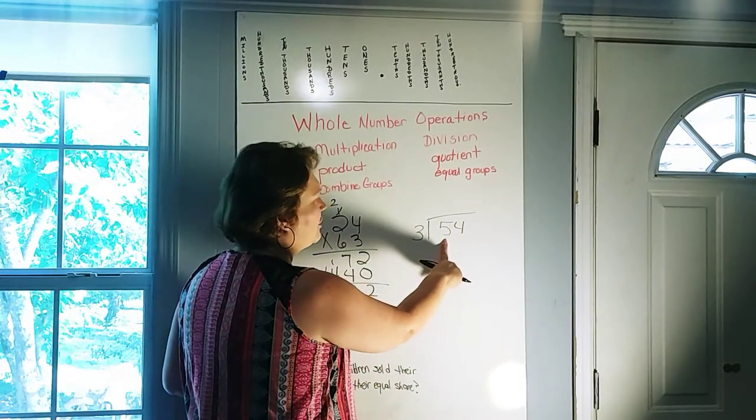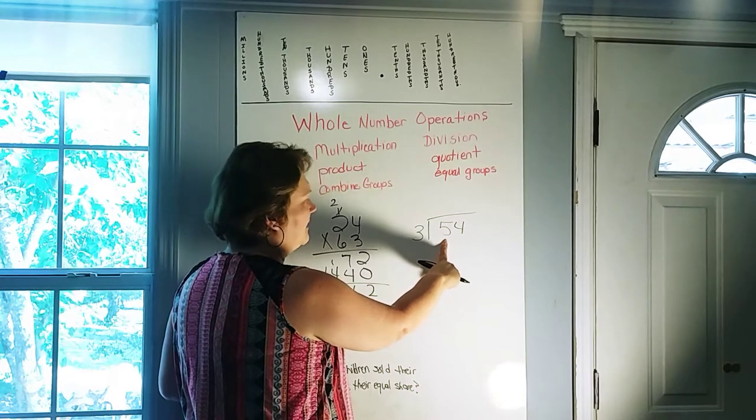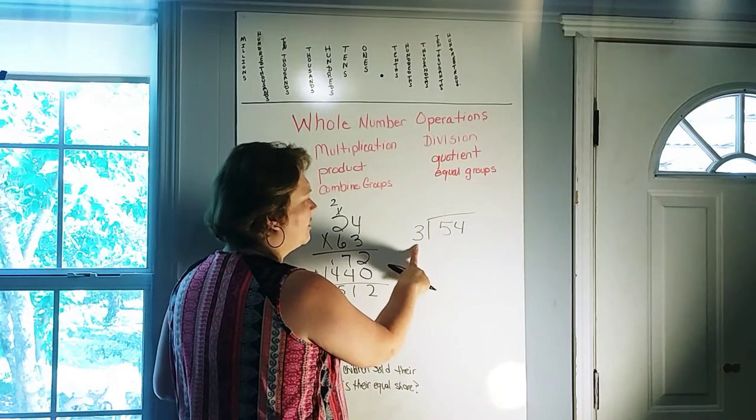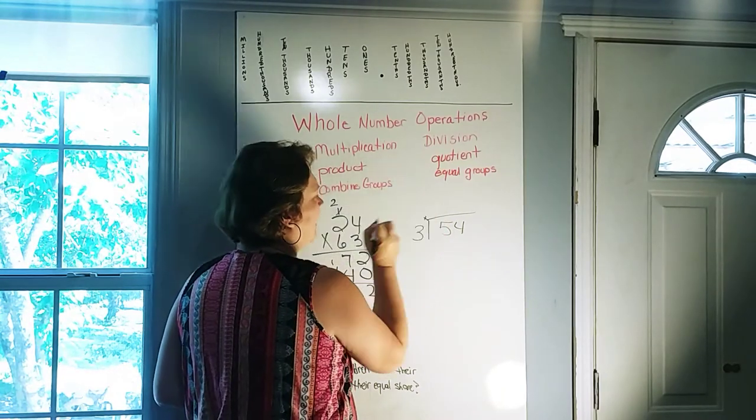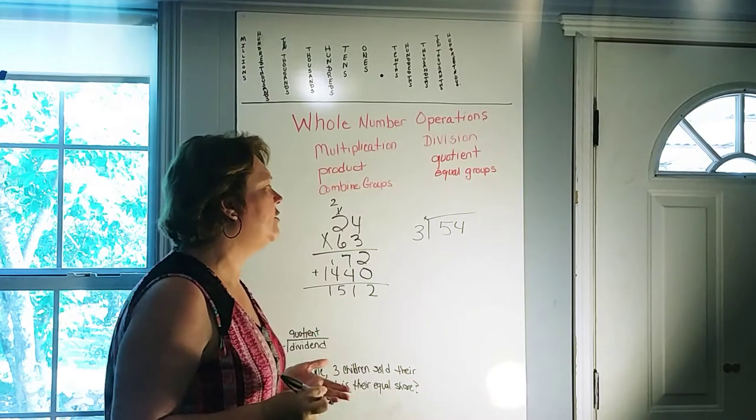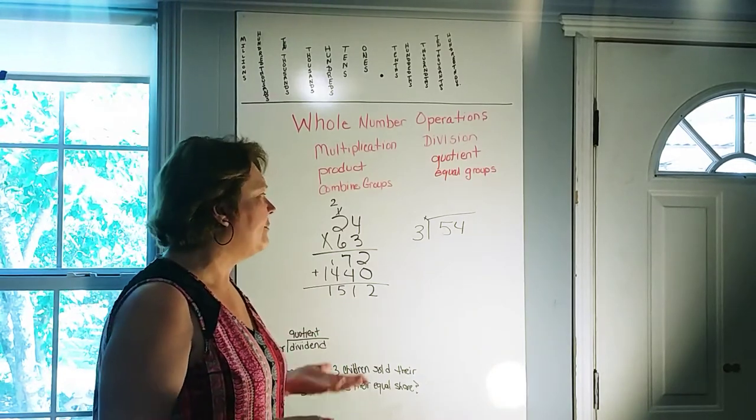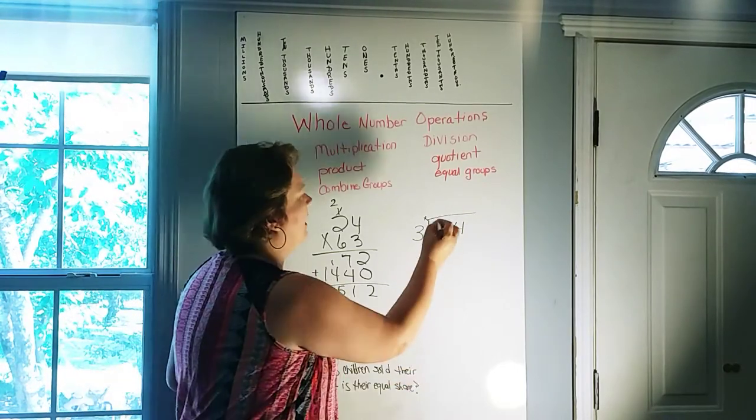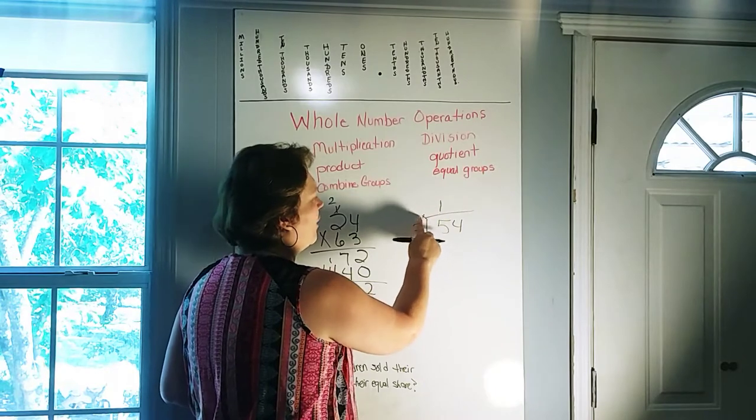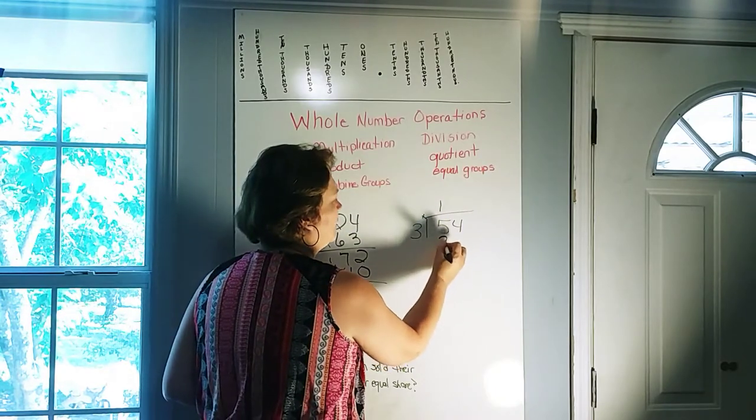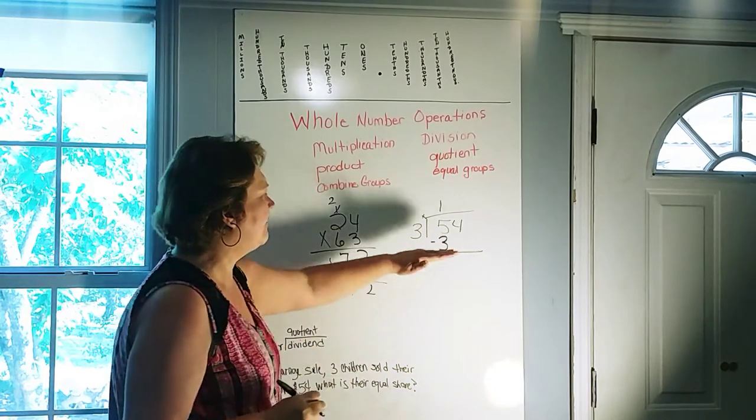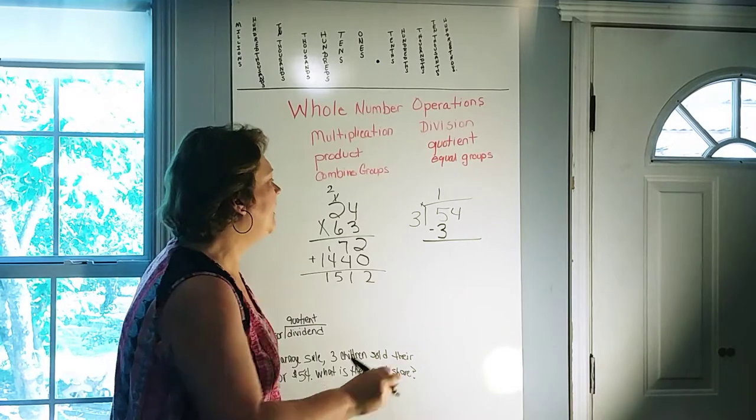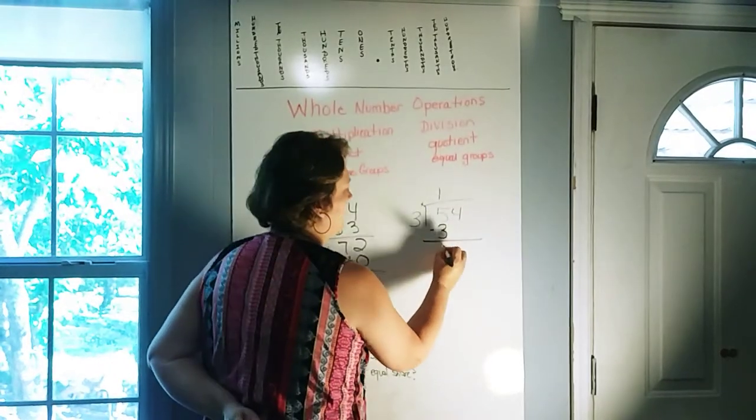So let's look at the first number in our dividend. And we see that it is a 5. So what we have to do is decide what number we can multiply times 3 that will get us close to 5 without going over. 3 times 1 is 3. 3 times 2 is 6. That's too high, so we'll have to stick with the number 1. So now we have 1 times 3 is 3. And when we're dividing, everything below that original problem, we're going to subtract. So 5 minus 3 leaves us with 2.